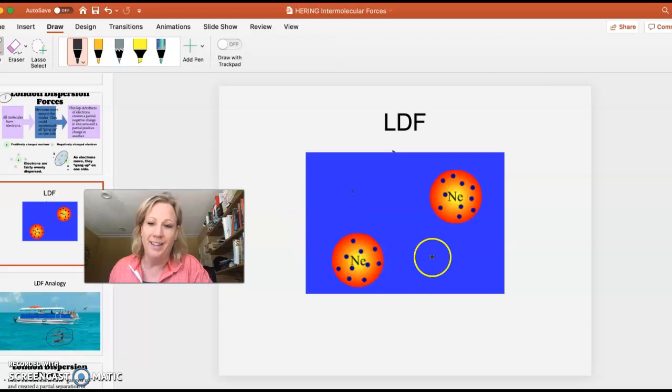You can see there's more electrons over on this side of this neon and less over here, which makes it slightly negative and slightly positive. And then a nearby neon maybe has more electrons over here, which would give it a partial negative and this side would be partial positive.